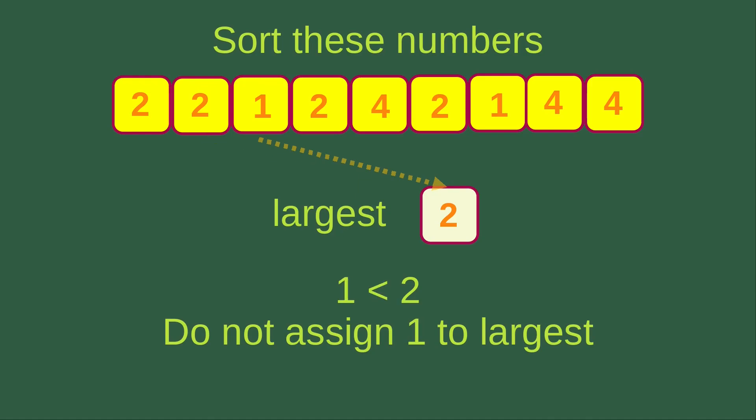Then I try another number on the unsorted list, which is one. Since one is smaller than two, I don't have to assign that number to the largest variable. So the largest variable up to now is still two. Then I check the fourth number, and I see that two is equal to two. That means I don't really need to assign that number to the largest variable, so the largest variable remains at two.